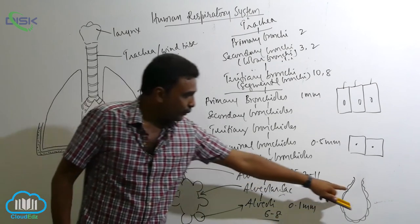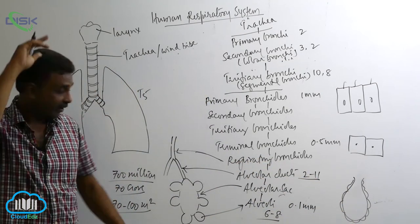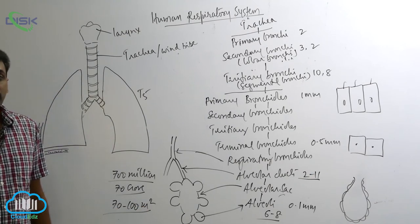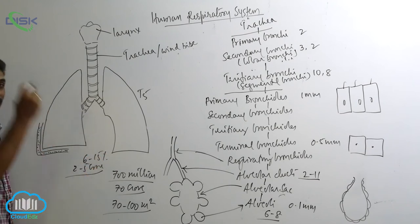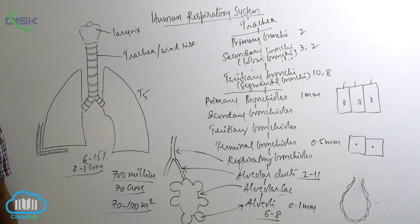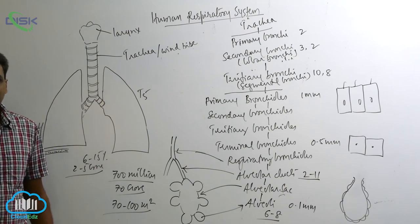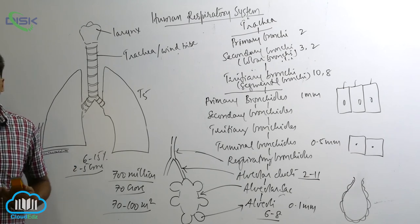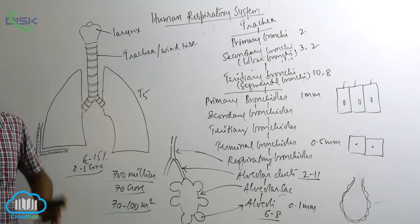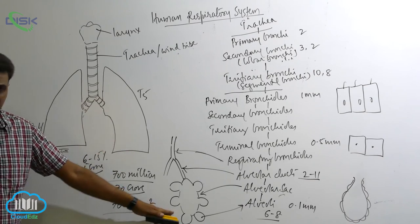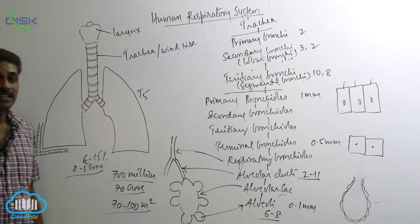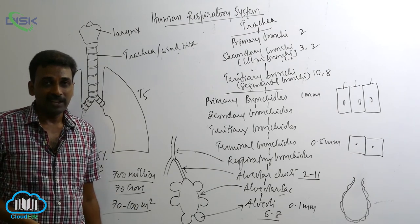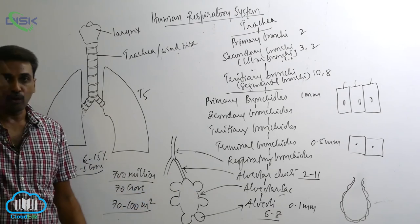At birth, only 6 to 15 percent of the total alveoli are present — about 2 to 5 crore alveoli. Before birth, the lungs are not working and are filled mostly with fluid inside. After birth, the number of alveoli gradually keeps increasing until it reaches 70 crore over a period of time.